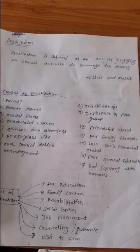Next is friendship circle — if the friendship circle is very bad, bad things may happen automatically. Next is poor family control — due to poor family control, because the family couldn't exercise proper control, prostitution of the poor family may occur.